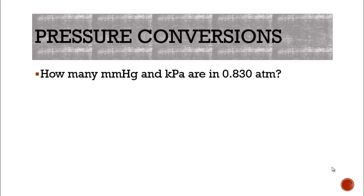So let's look at doing some pressure conversions. We're going to use the ideas that we were using in stoichiometry to do pressure conversions. How many millimeters of mercury and kilopascals are in 0.830 atmospheres?